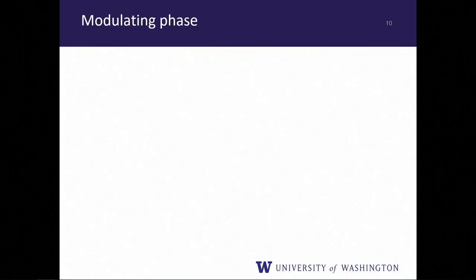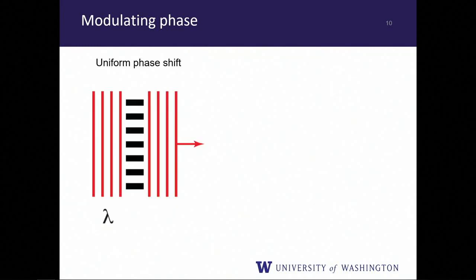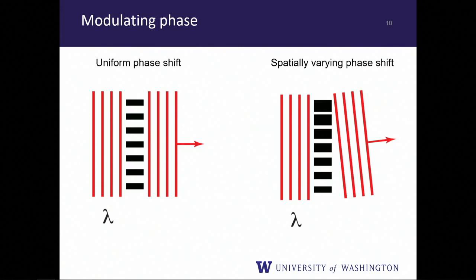Using these sub-wavelength gratings to modulate phase: a uniform grating gives a uniform phase shift; a spatially modulated grating gives a spatially varying phase shift. In this example, the duty cycle of the grating has a linear ramp, which corresponds roughly to a linear phase shift — equivalent to a beam deflector. The higher effective index at the top delays light more.